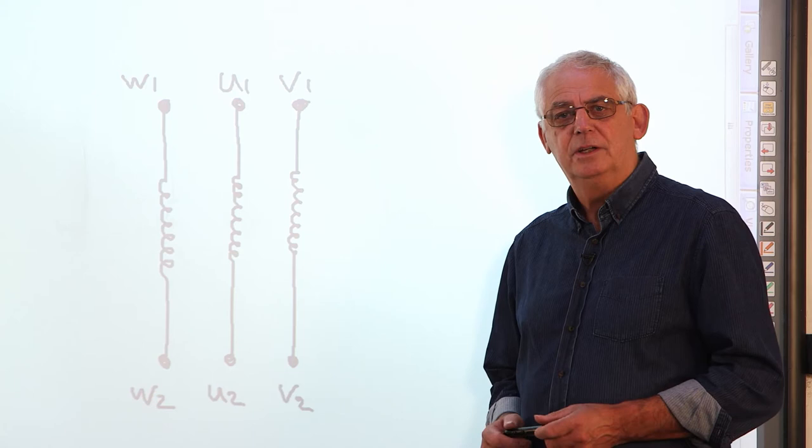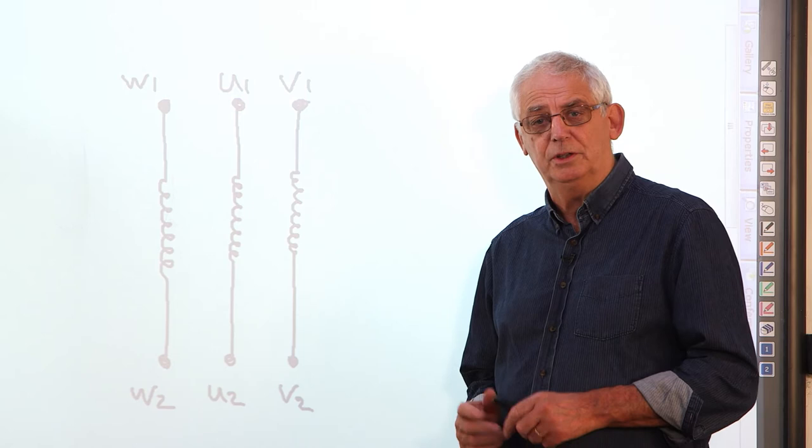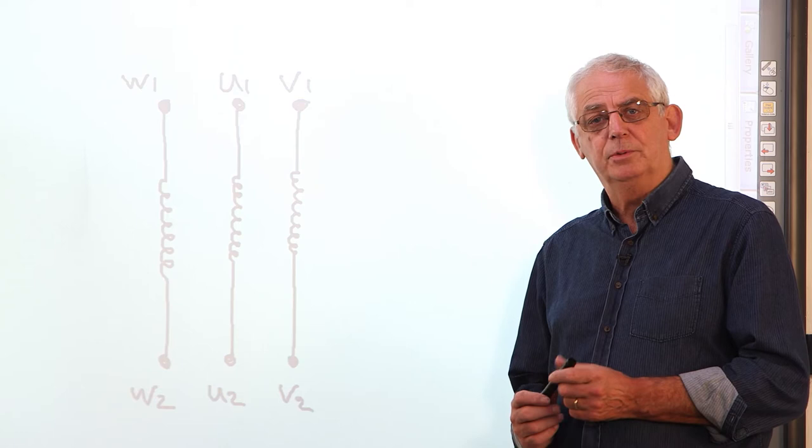We're going to start with the connections. If we look on the terminal block of most three-phase motors, not all because they use different letters or numbers sometimes, we'll see that the terminal block is made up of six connections.